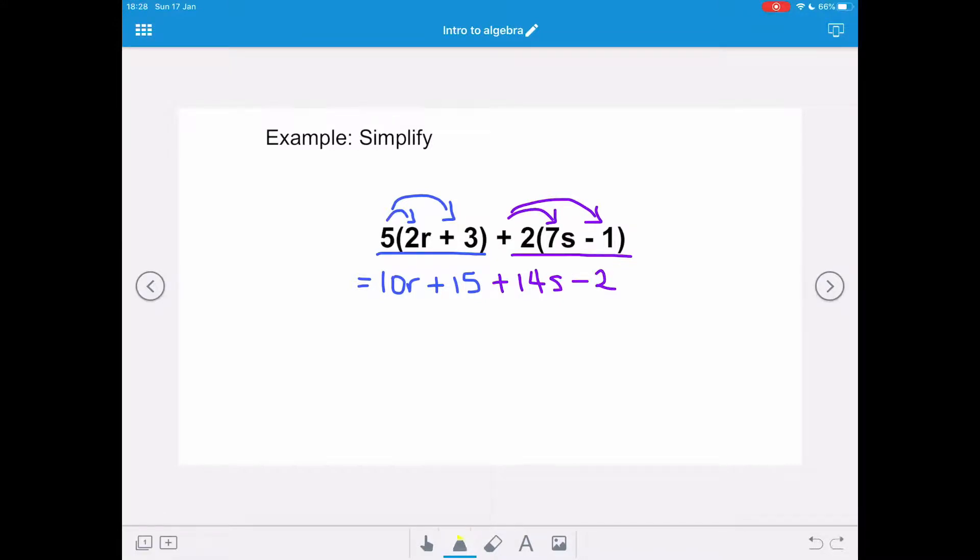Now we need to do some simplifying by collecting our like terms. We've only got like constants. So our final answer is going to be 10r plus 14s and 15 take away 2 gives us plus 13.